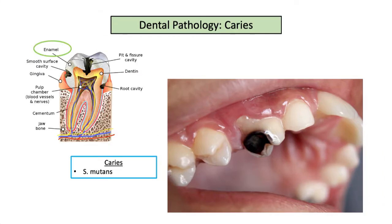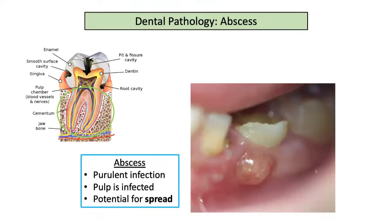Bacteria in the mouth, especially Strep mutans, a strain of Strep viridans, contributes to dental caries. An abscess can occur when local tooth decay or infection spreads deep into the tooth, through the root and then into the tissue surrounding the root. The abscess is a walled-off purulent infection that might spread to extra-oral cavities.